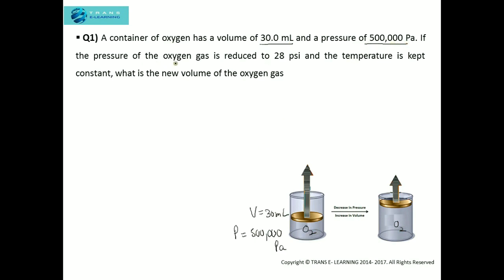If the pressure of the oxygen gas is reduced — as you can see here, we are moving the piston outward, so the pressure will get reduced and the volume will get increased — the pressure is reduced to 28 PSI.